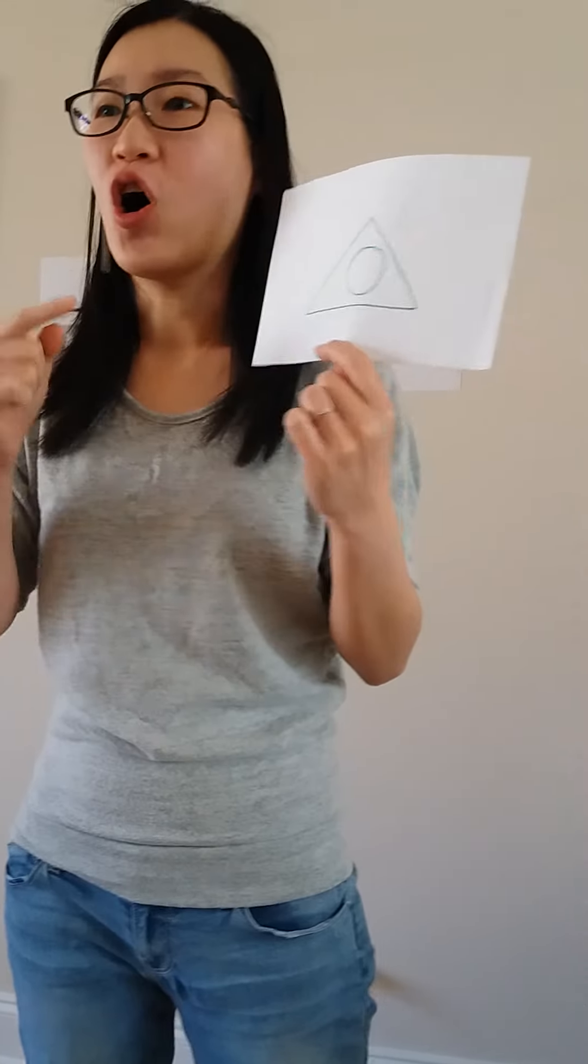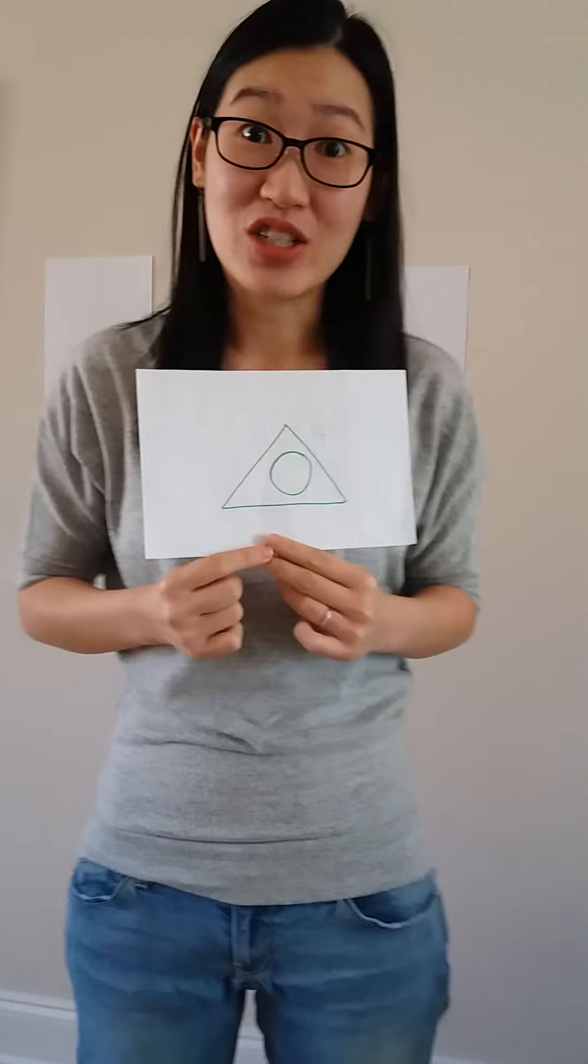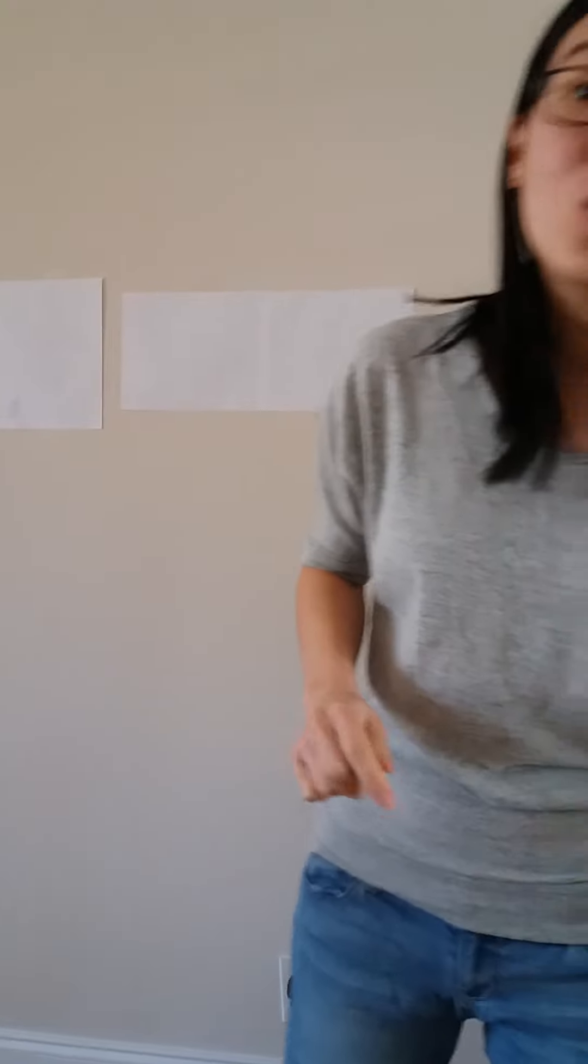You see, when I specified clearly that I wanted the circle to be inside the triangle, all of you gave me the same picture. That is why it is important to tell you where I want the circle and the triangle. So today we are going to learn about prepositions. 'In,' the one I used just now, is a preposition.